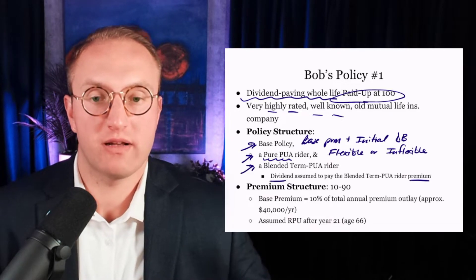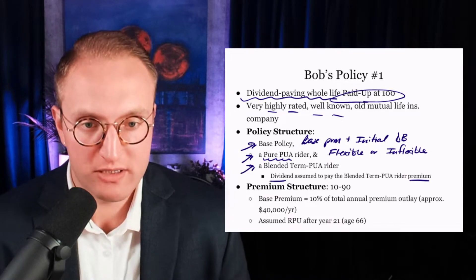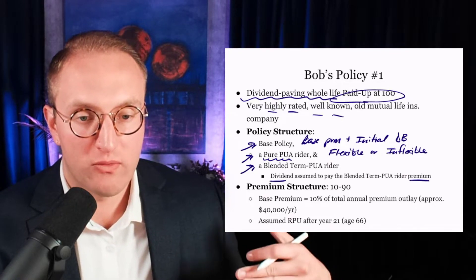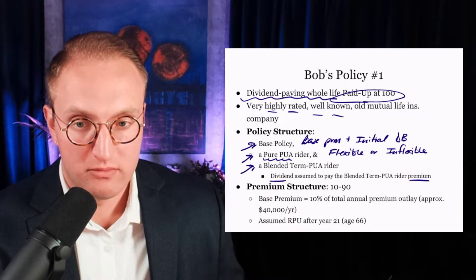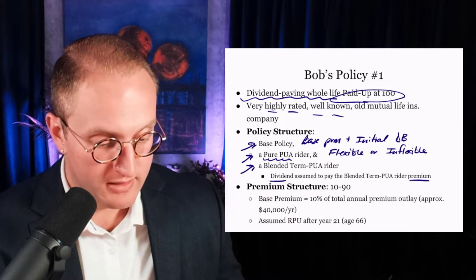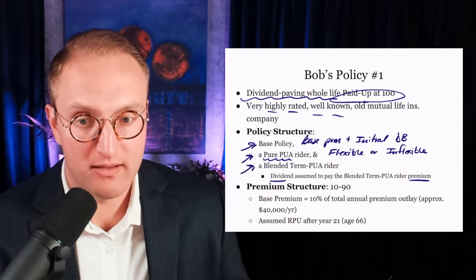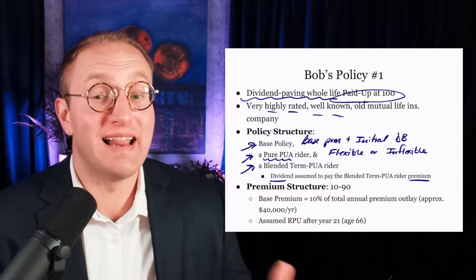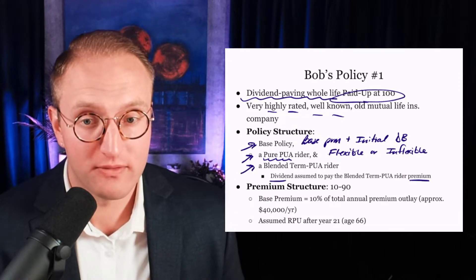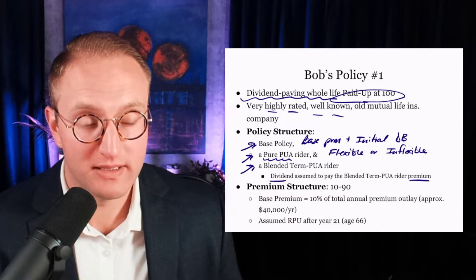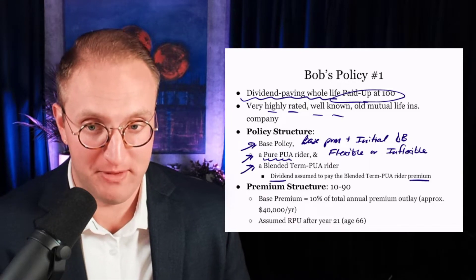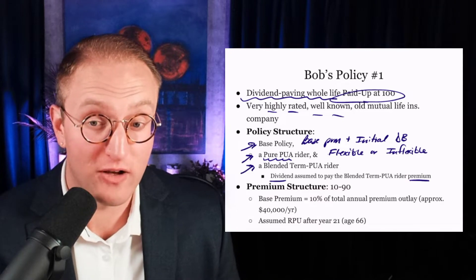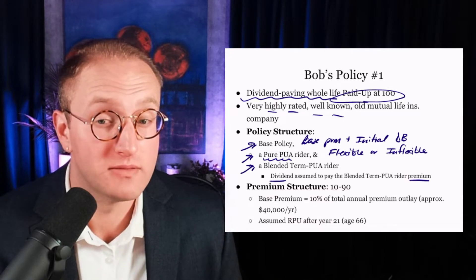This policy number one had a blended term PUA rider where the dividend was assumed to pay the premium. In fact, in this particular case, for this particular blended term PUA rider, in order for the rider to remain in force on the contract, the dividend had to be the source of the rider premium. The rider doesn't even allow the client to pay it himself — the dividend must pay the rider premium. If the dividend election has changed, then the rider falls off.